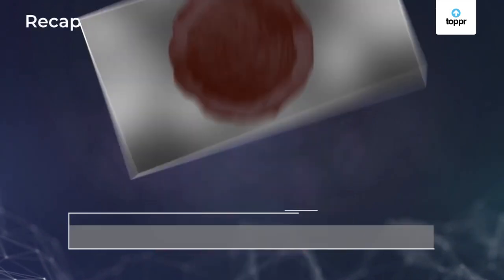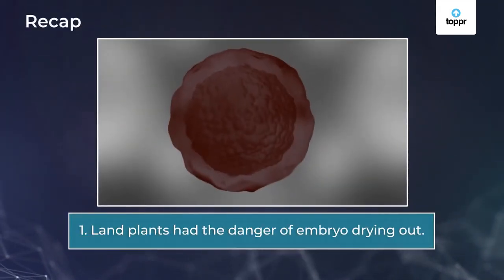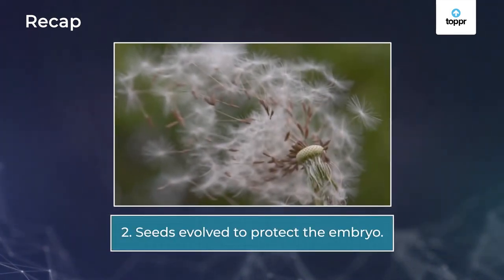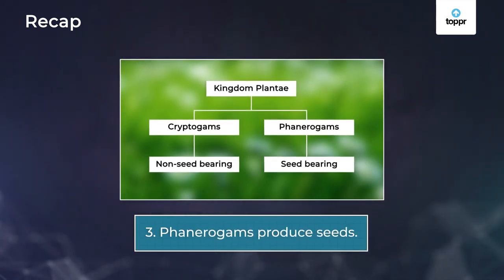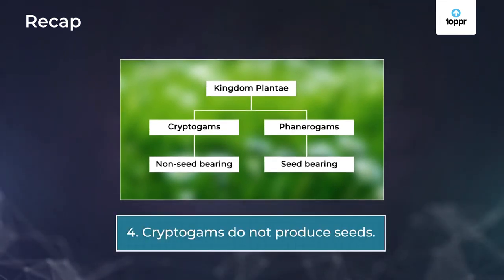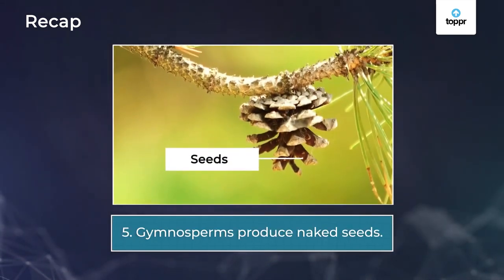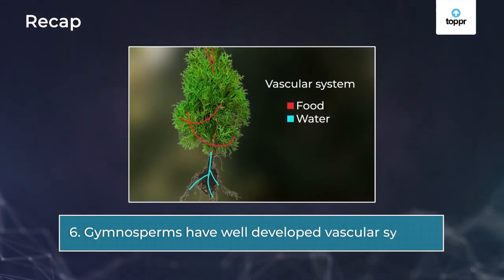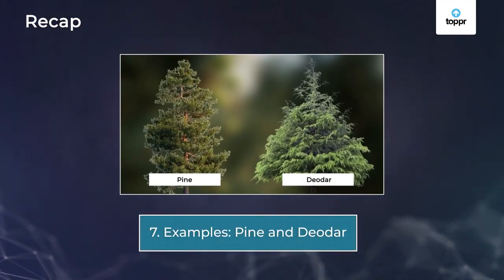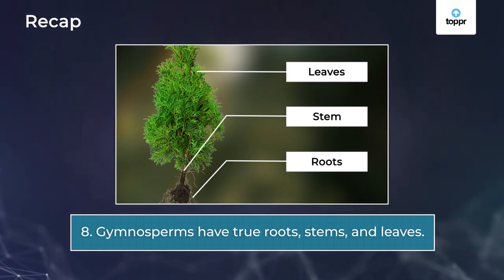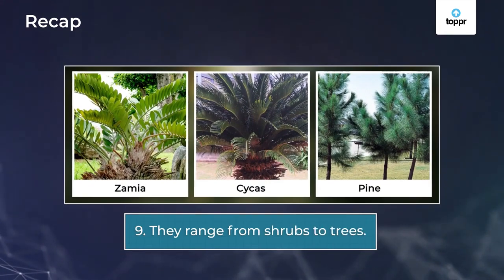Let's recap what we learned. When aquatic plants evolved to land plants, there was a danger of the embryo drying out. To protect the embryo from drying, seeds evolved. The plants which produce seeds are called phanerogams, whereas cryptogams include those plants which do not produce seeds. In phanerogams, the plants which produce naked seeds are called gymnosperms. They possess a vascular system for transportation of water and food. Examples of gymnosperms are pine and deoda. Gymnosperms have true roots, stems, and leaves, and range from shrubs to trees.